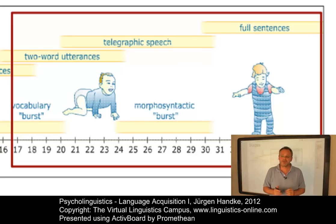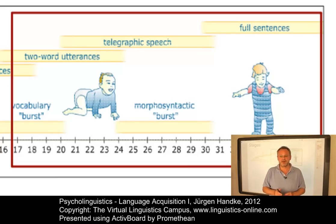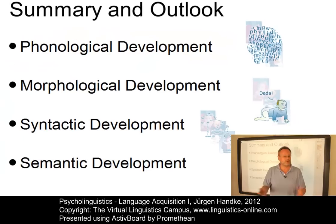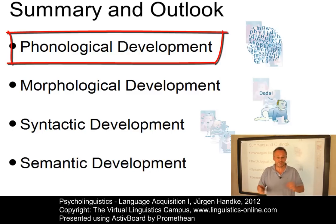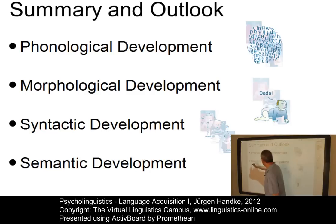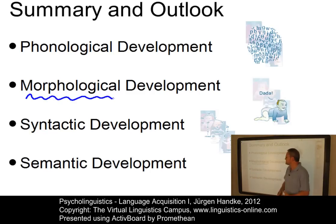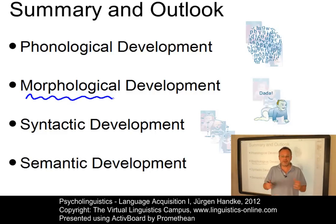Along the way, the child masters the essential ingredients of his language. These central aspects will be discussed in a follow-up e-lecture on language acquisition. During the first year of life, children achieve control of the speech apparatus and develop a sensitivity to the phonetic distinctions used in the target language. Then there is the level of morphological development — that is, the acquisition of the relevant morphs plus the rules governing their use in the target language.